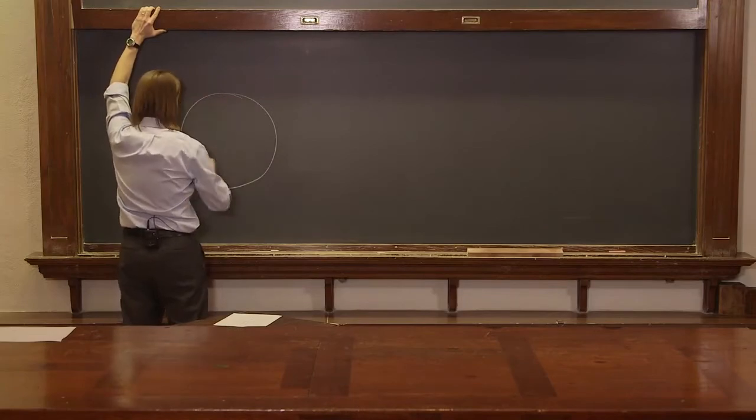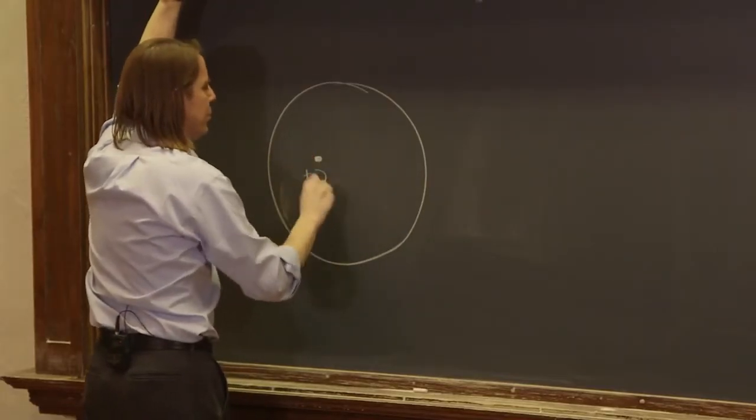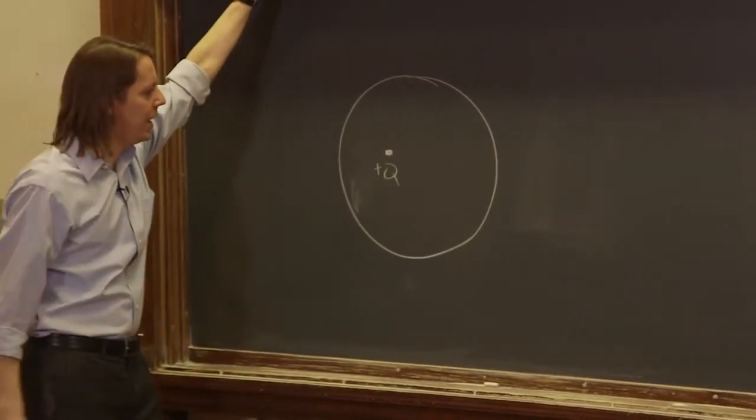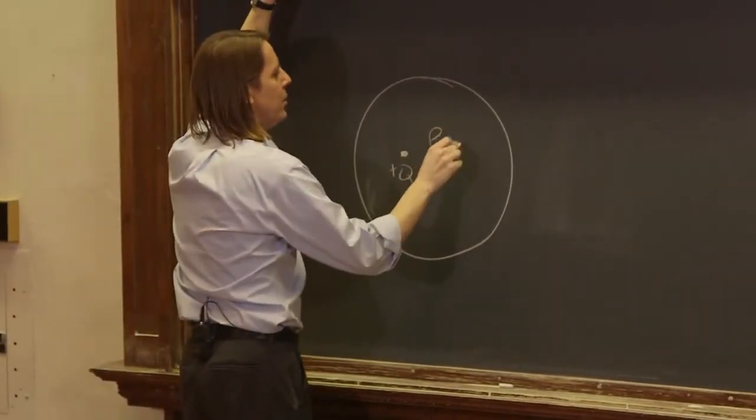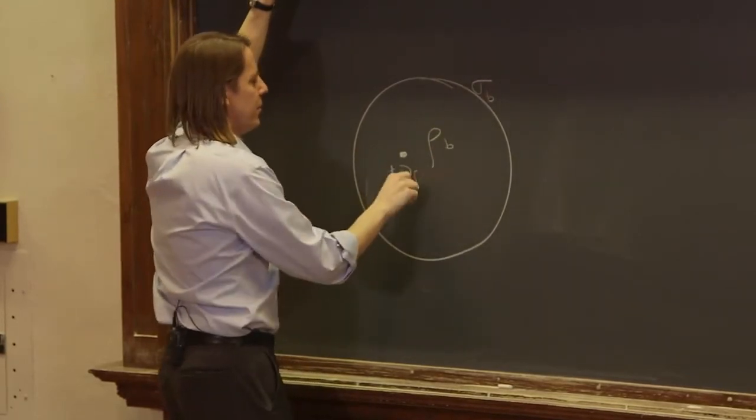We had a dielectric sphere, right? And we're going to put in a charge. I'm not even going to put it in the middle. I'm going crazy. It's going to create a polarization field. You're going to get bound charge in here. You're going to get bound charge on the surface. You've got your free charge here.